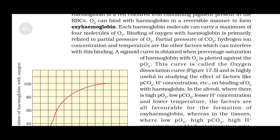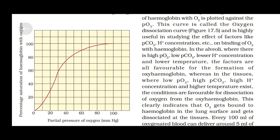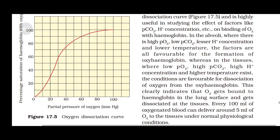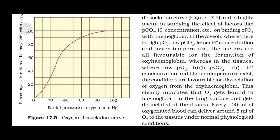This curve is called the oxygen dissociation curve and is highly useful in studying the effect of factors like PCO2, H+ concentration, etc., on the binding of O2 with hemoglobin. In the alveoli, where there is high pressure of oxygen, low pressure of CO2, lesser H+ concentration, and lower temperature, the factors are all favorable for the formation of oxyhemoglobin.